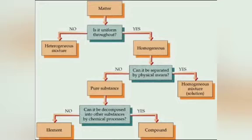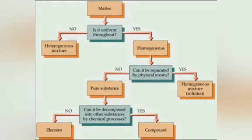What is a pure substance? If any object can be decomposed further, then it is a compound, otherwise it is an element. Matter is classified into pure substance and impure substance. Pure substances contain a single type of particles, whereas impure substances do not. Pure substances can be classified as elements and compounds. Elements have a single type of particles, whereas compounds have different types of particles in a fixed ratio bonded by chemical bonds.